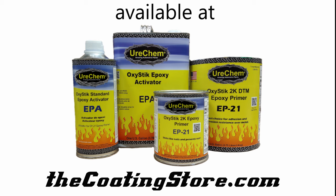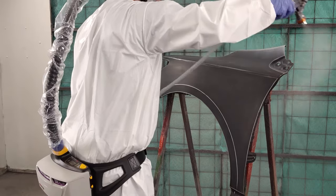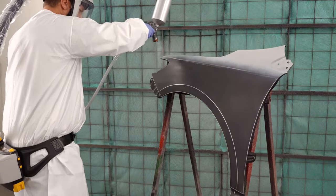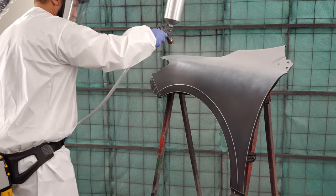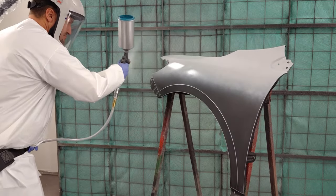Two component or 2K Epoxy Primers, such as OxyStick Epoxy Primer, offer best-in-class adhesion and corrosion resistance to a wide range of surfaces including bare metal, fiberglass, gel coat, body filler, and existing paint finishes and even many plastics used in the automotive industry. OxyStick EP21 is currently available in gray and we will also be adding white and black in the near future.